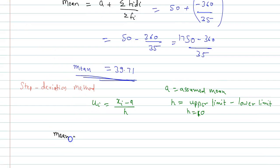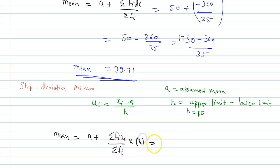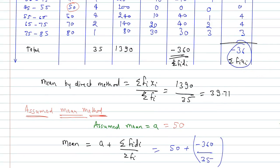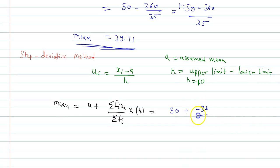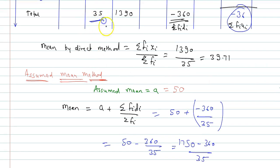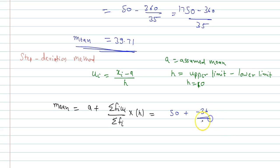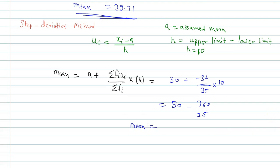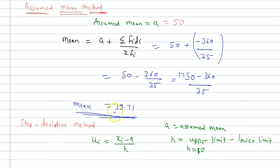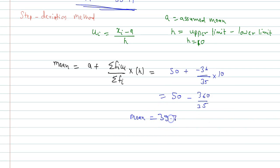By the step deviation method, mean = a + (ΣFiUi / ΣFi) × h = 50 + (−36/35) × 10 = 50 − 360/35 = 39.71. All three methods give the same mean of 39.71.